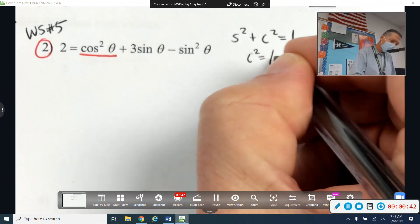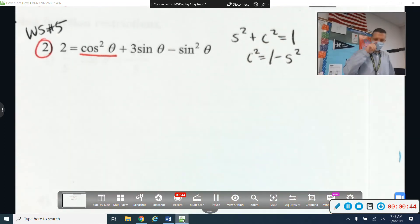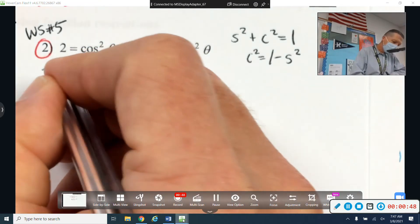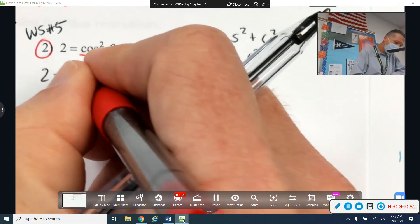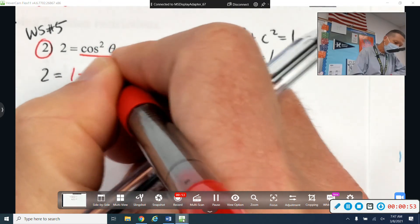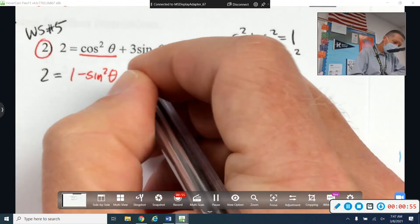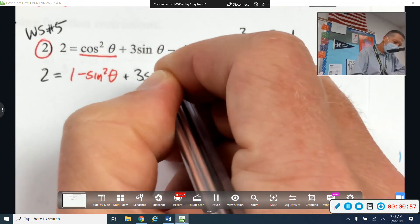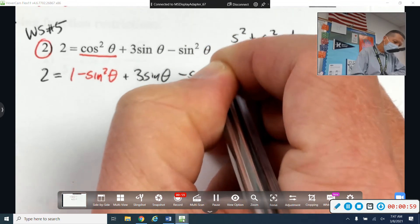So cosine squared is one minus sine squared. So 2 equals 1 minus sine squared theta plus 3 sine theta minus sine squared theta.